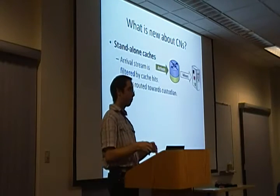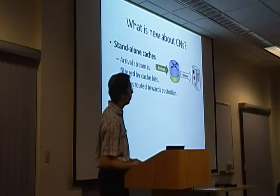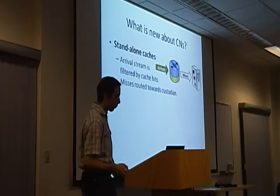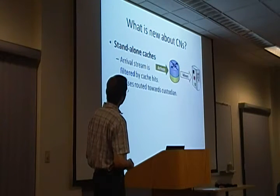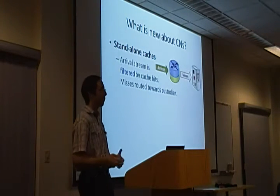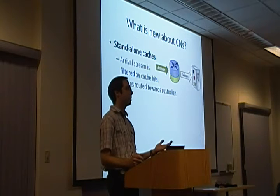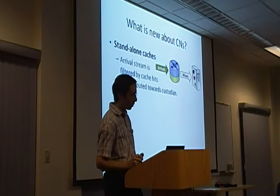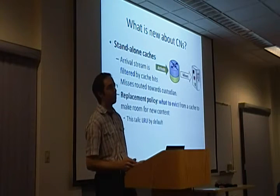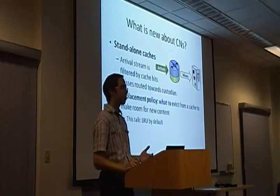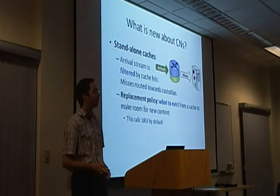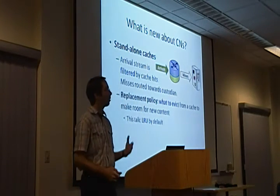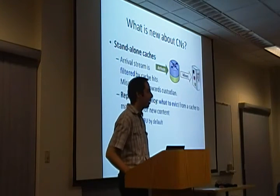Now that we understand cache networks, what is the additional complexity compared to what we already know? A standalone cache filters the request stream: it either satisfies a request — blocking it from being propagated forward — or it doesn't have the content and forwards the request to the custodian. Since caches have limited capacity, they must evict content to make room for new content; these are called replacement policies. In this work we mainly refer to LRU — Least Recently Used — which evicts the content that was least recently accessed. Modeling even a single cache is very difficult; many have proposed approximations to evaluate cache behavior.